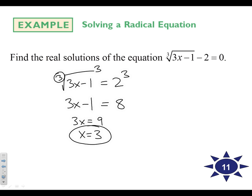We can go ahead and check it. The cube root of 3 times 3 minus 1 minus 2. The cube root of 9 minus 1 minus 2. The cube root of 8 minus 2. The cube root of 8 is 2. Is 2 minus 2 equal to 0? It is. Story checks out. Similar steps. Problem 11, give it a shot.